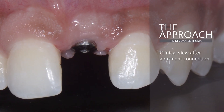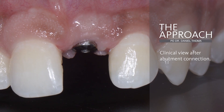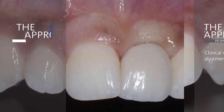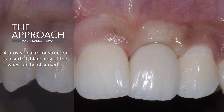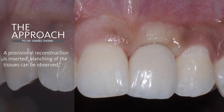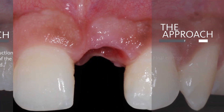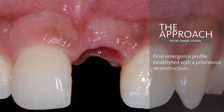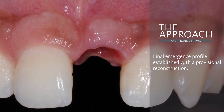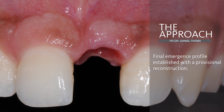Two months later, we can see a clinical view having performed a buccal connection. Subsequent steps include the use of a provisional reconstruction fabricated by a dental technician. By using this provisional reconstruction, we can add some floral composite and shape the emergence profile. Here we can already see the blanching of the tissues due to the pressure of the provisional reconstruction. Following a healing phase of usually 2 to 3 months, we can see the final emergence profile established with the provisional reconstruction.